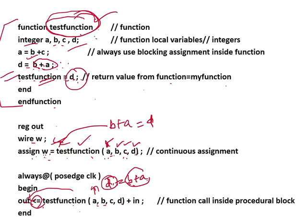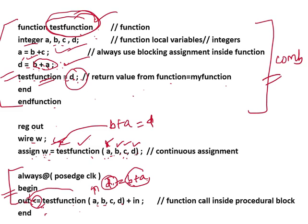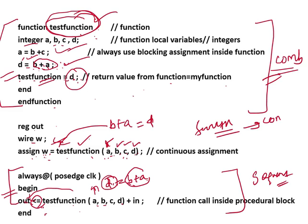Here we have a non-blocking assignment because it is outside of the function — inside the function it is always blocking assignment, outside it can be non-blocking. Because there is 'always @(posedge clock)', this part is a sequential block. But the function itself is a pure combinational block — this adder doesn't include any delay or timing control parameters. Any function call is a pure combinational circuit; if 'always' with a clock is present, then it becomes a sequential circuit.